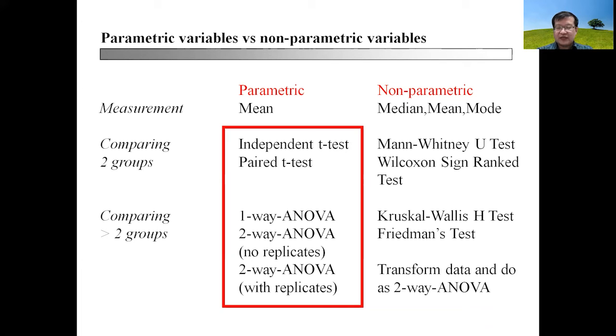If you are conducting one-way analysis of variance for parametric data, the comparative equivalent will be Kruskal-Wallis H-test in non-parametric analytical methods. If you are running two-way ANOVA without replicates, the equivalent is Friedman's test. However, if you are performing two-way ANOVA with replicates, the best way is to transform the data and do it as two-way ANOVA assuming it conforms to distribution of normality.